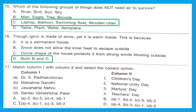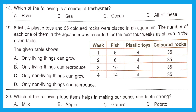Question 17: Match column 1 with column 2. Dr. S. Radhakrishnan matches Teacher's Day (A-4). Mahatma Gandhi matches Martyr's Day (B-3). Jawaharlal Nehru, our Chacha Nehru, matches Children's Day (C-1). Sardar Vallabhbhai Patel matches National Unity Day (D-2). The right option is option D: A-4, B-3, C-1, D-2.